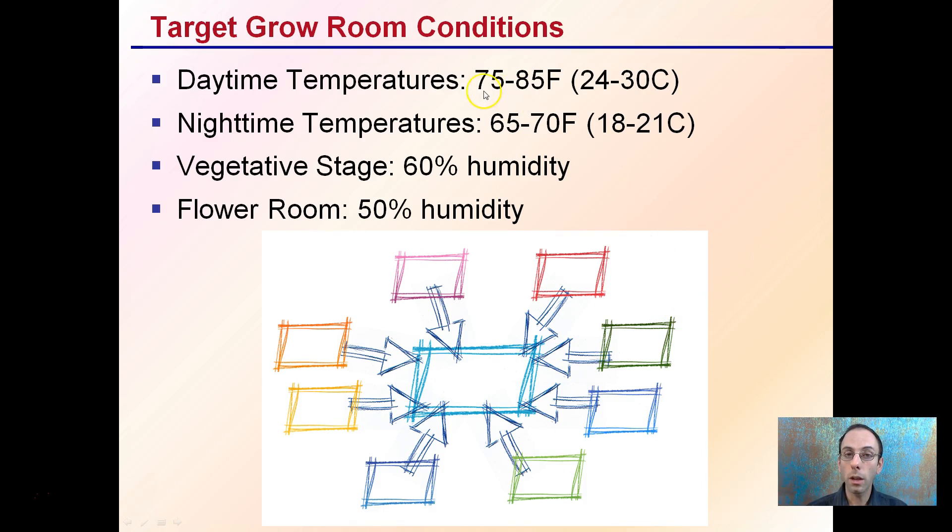Target room conditions: we're looking at 75 to 85 degrees Fahrenheit during the day, nighttime 65 to 70, and 50 to 60 percent humidity is what you're generally targeting for your grow room.